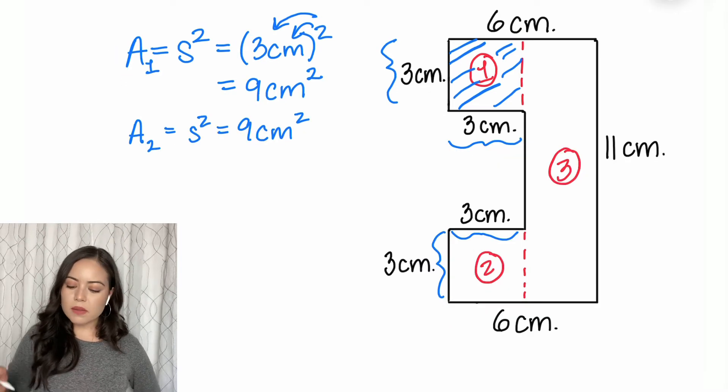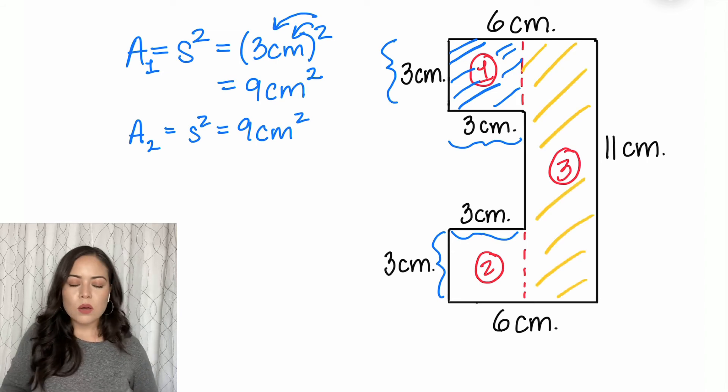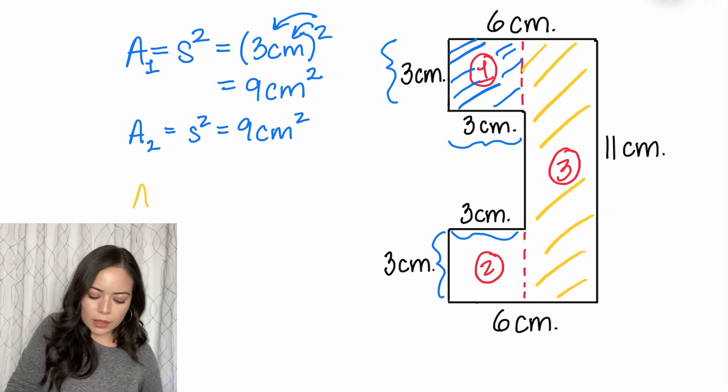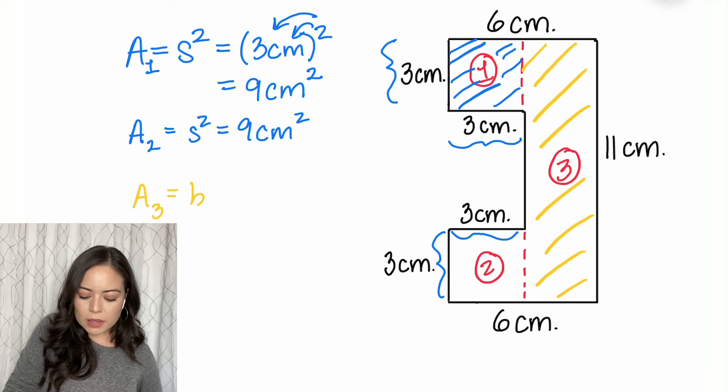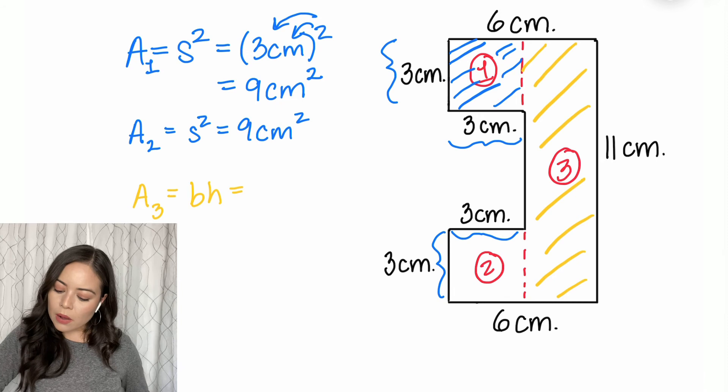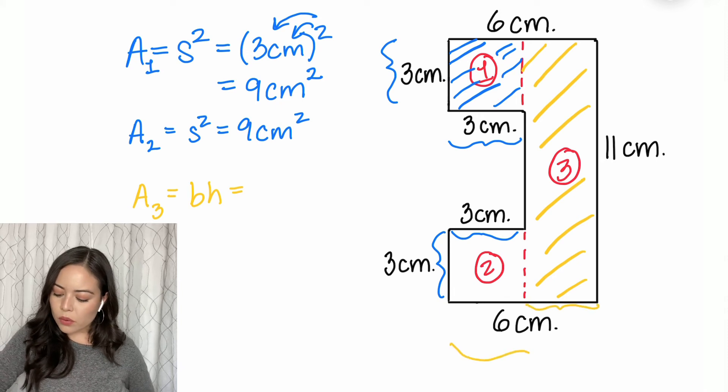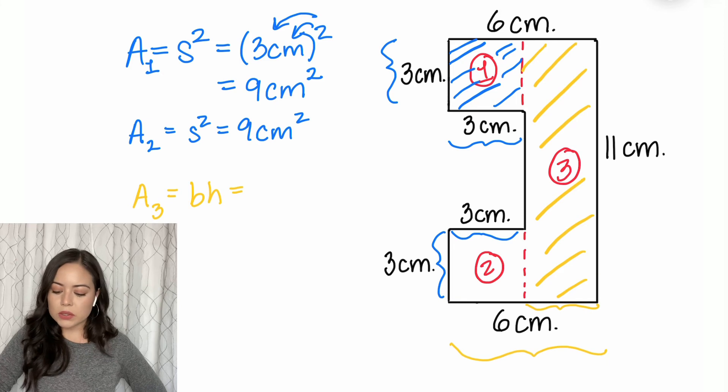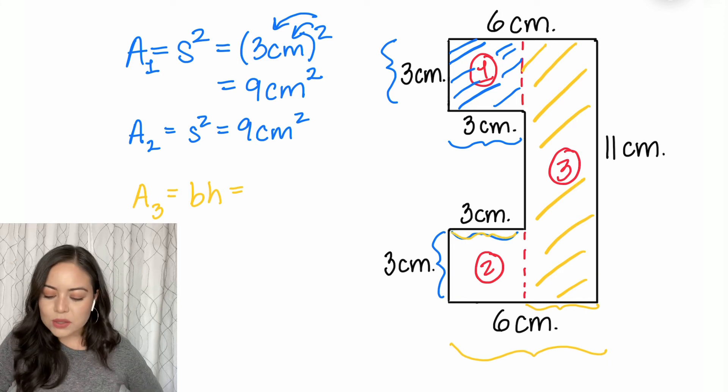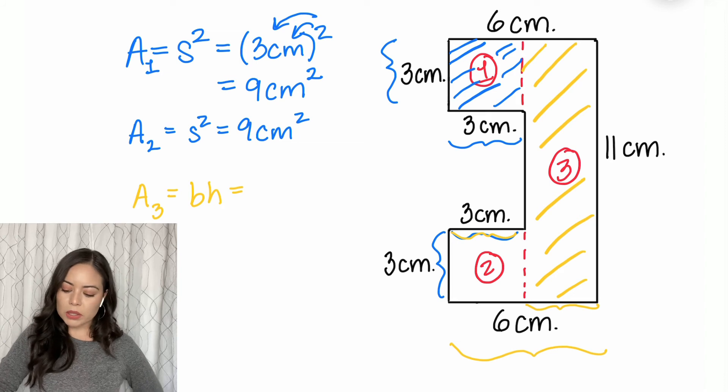Now to solve the last part, the yellow rectangle. The area is base times height or length times width. We're not sure about the base, but we can find it. If the whole thing measures six centimeters and a piece of it is three centimeters, the rest is six minus three, which is three centimeters.